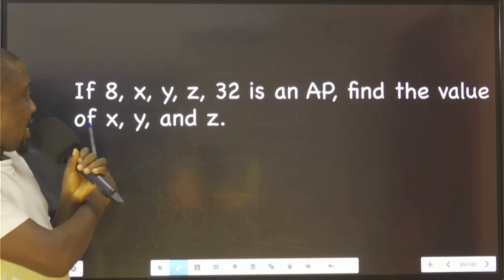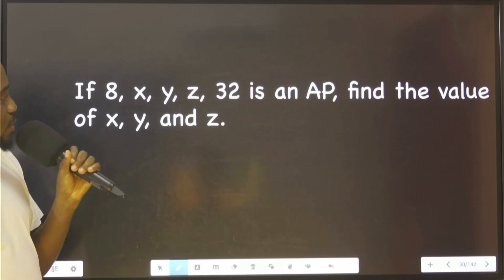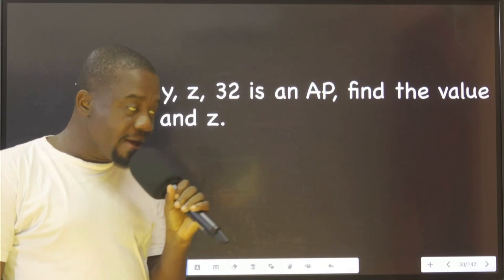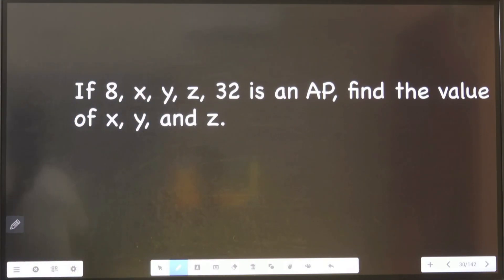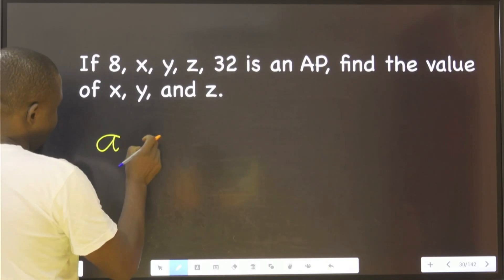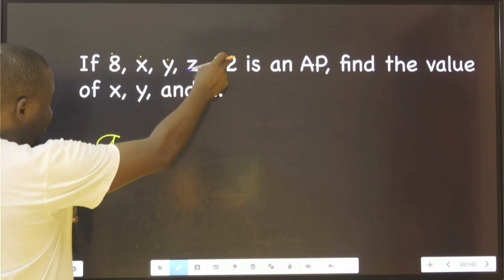Look at this. It says if 8, x, y, z, and 32 is an AP, find the value of x, y, and z. So you can see in this place the first term is 8. That is the fifth term is equal to 32.